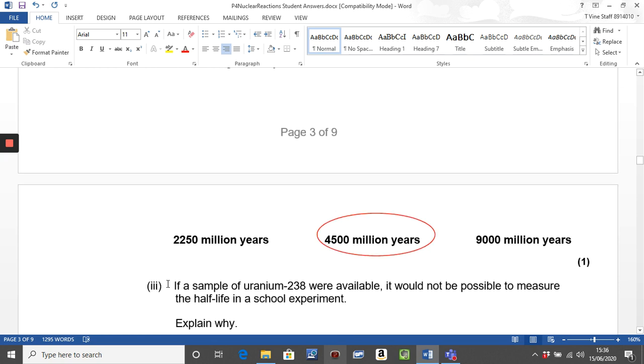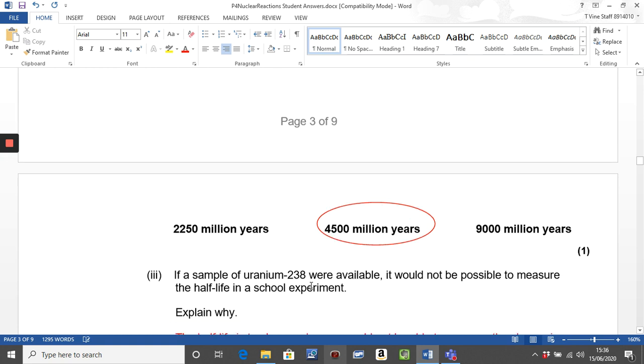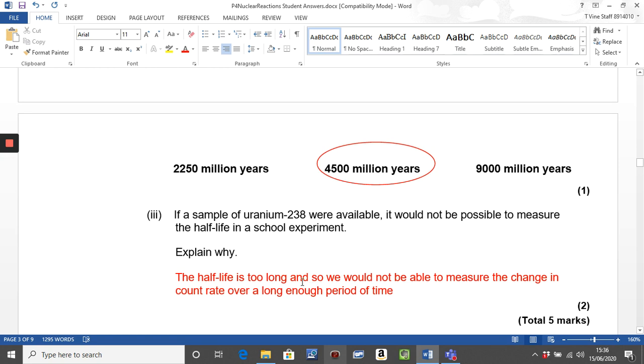You had to think about this next question carefully. If a sample of uranium-238 were available, it would not be possible to measure the half-life in a school. Remember, the half-life is four and a half thousand million years. Answer was very simple. Half-life is too long, and so we would not be able to measure the change in count rate over a long enough period of time. Not one of us could sit there with a stopwatch and wait for four and a half thousand million years to pass by to find its half-life. So logic, very clear.